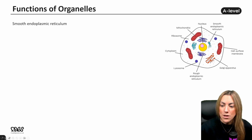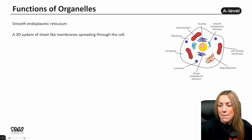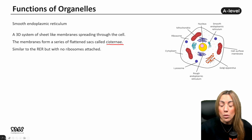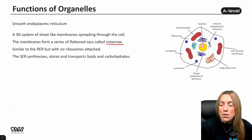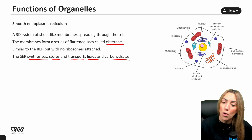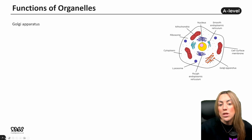The smooth endoplasmic reticulum is very similar in structure to the rough ER — a 3D system of sheet-like membranes forming flattened sacs, which we can call cisternae — but with no ribosomes attached to its surface, so it looks smooth under the microscope. The smooth ER synthesizes, stores, and transports lipids and carbohydrates — not proteins. These will be transported to the Golgi apparatus.